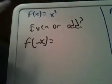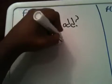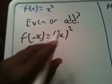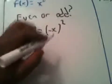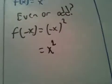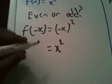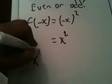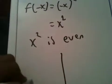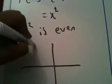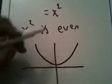So we're going to get, let's see, that's going to be minus x squared. And if you square a negative number, it's going to be a positive, so that's just going to be x squared. And so x squared is even, and it looks like that, kind of.